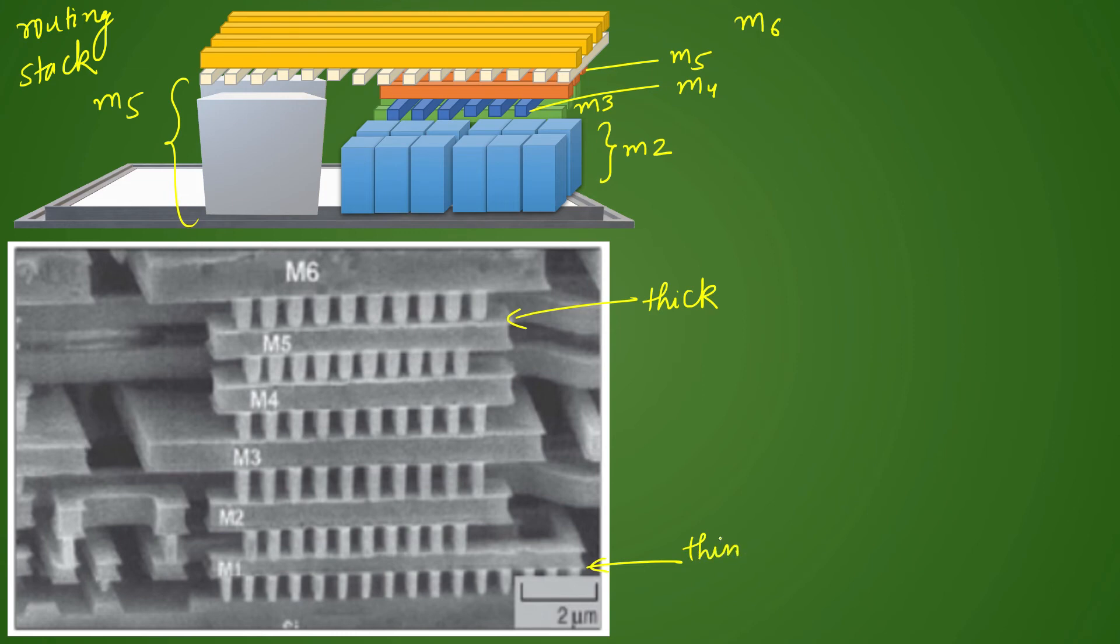So this is thinner and this is thicker. Routing resources in lower layers are more because of the same reason that since they are thin, more routing resources fit in the same area, but less routing resources of thicker metal are available in the same area.